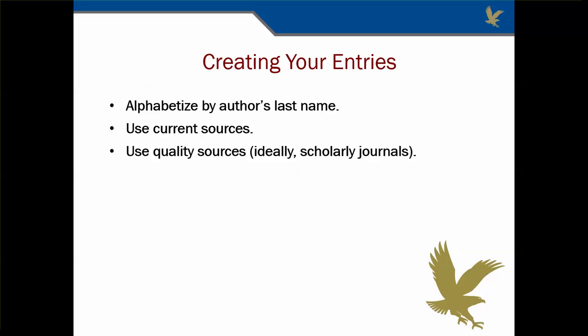When you are ready to create the entry for your bibliography, alphabetize sources by the author's last name. If there is no author and you are using the title to begin your entry, you will also place that in the correct place alphabetically in your list. Make sure you are using good quality sources that are current. One of the most frequent comments on annotated bibliographies is the age of the sources, and another is their quality. Finding journals is ideal.